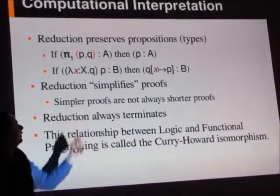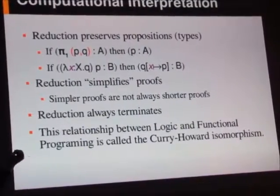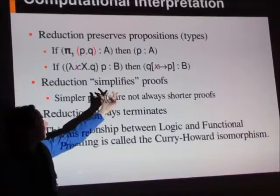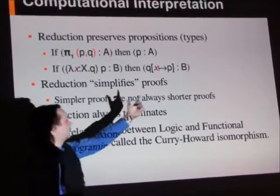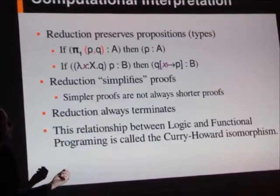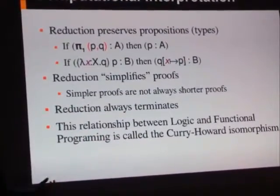Similarly, if we have lambda x dot q applied to p, and that has type b, then this substitution of p into the expression of q replacing the x's will also have type b.